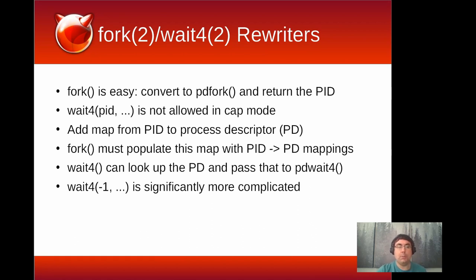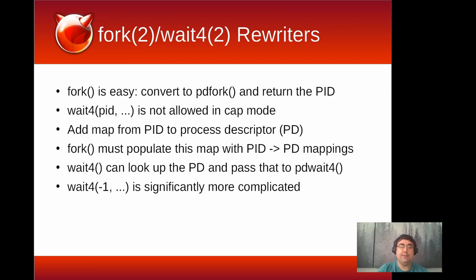But paths are not the only global namespace in FreeBSD — the PID namespace is another. Rewriting and emulating fork is relatively easy: we convert it to pdfork and return the PID. But wait on a PID accesses the global namespace and is not allowed. So we need a map in our programs that maps a PID back to a process descriptor, since pdfork gives us both. The fork rewriter saves this mapping, and the waitpid rewriter looks up the process descriptor given the PID passed in the syscall, then passes that to pdwait. If they call waitpid with -1 as a wildcard match for any child process, that gets even more complicated and is not in scope of this talk.